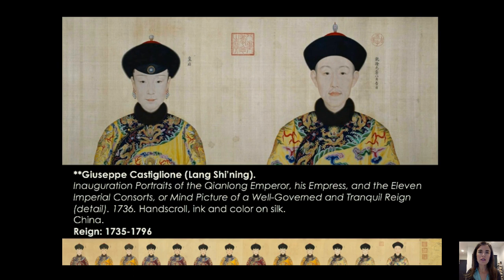From that name you can clearly tell Castiglione was not Chinese — he was from Italy, and he went by the Chinese name Lang Shining. This is a hand scroll created around the time of the inauguration of the Qianlong Emperor, an incredibly important emperor who ruled for most of the 18th century, from 1735 to 1796. It's called the Inauguration Portraits of the Qianlong Emperor, his Empress, and the Eleven Imperial Consorts. We are looking at a detail of this scroll.